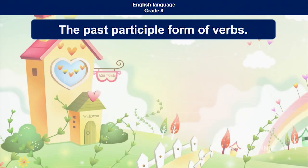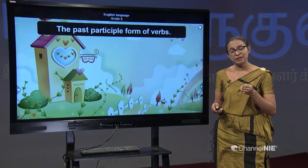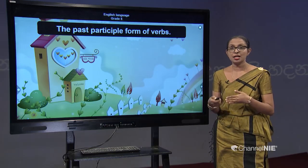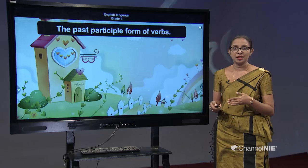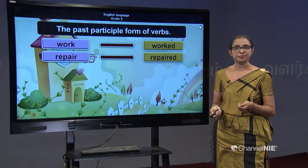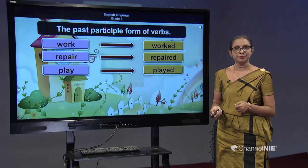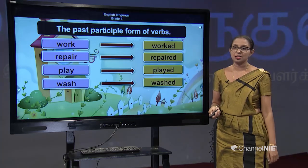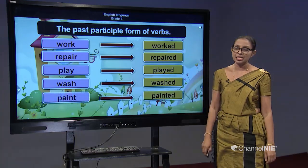Then the past participle form of verbs. Remember children, we have regular verbs and irregular verbs. In regular verbs we have 'ed' added to form the past participle. Let's check: work — worked, repair — repaired, play — played, wash — washed, paint — painted.